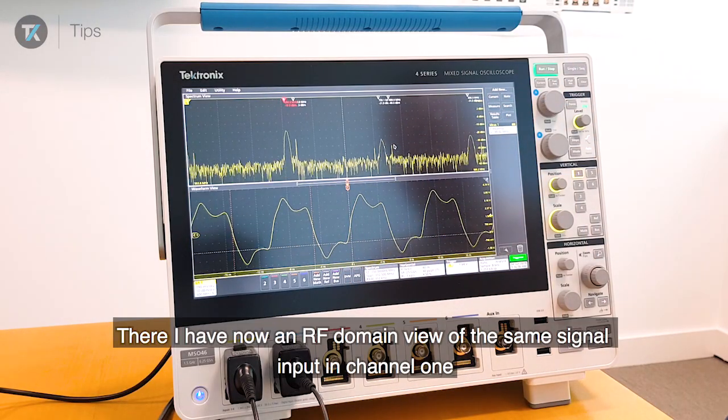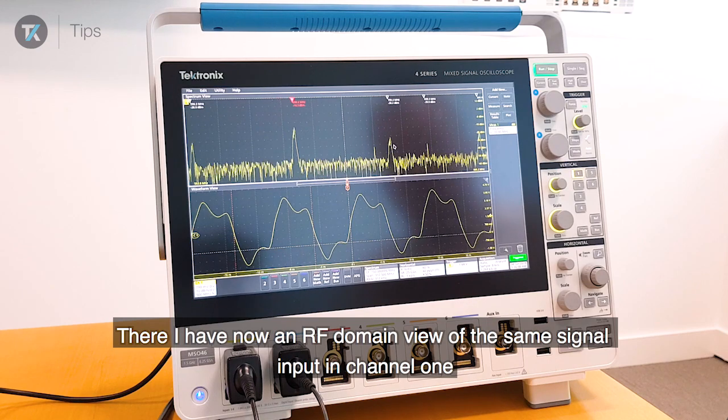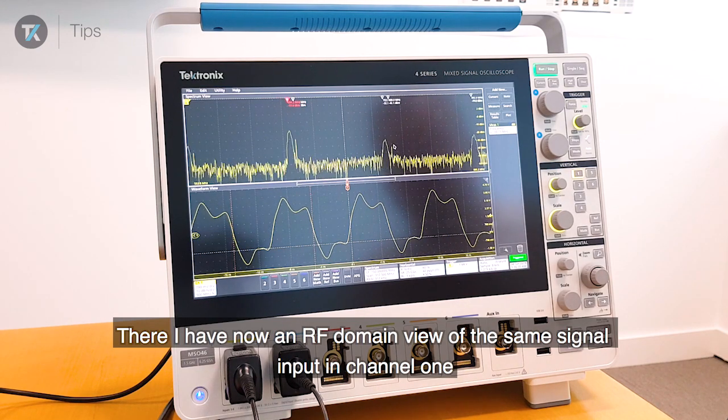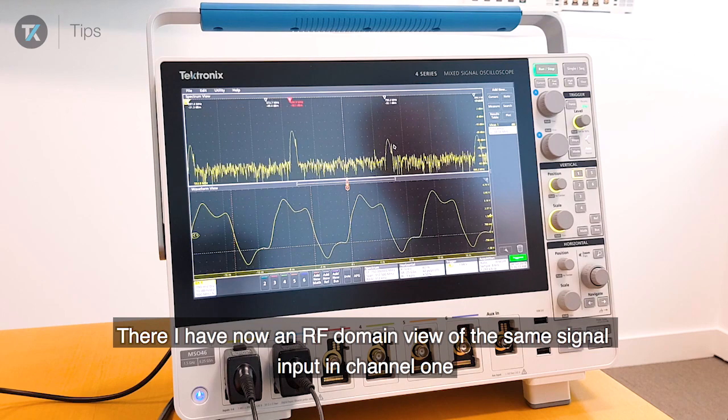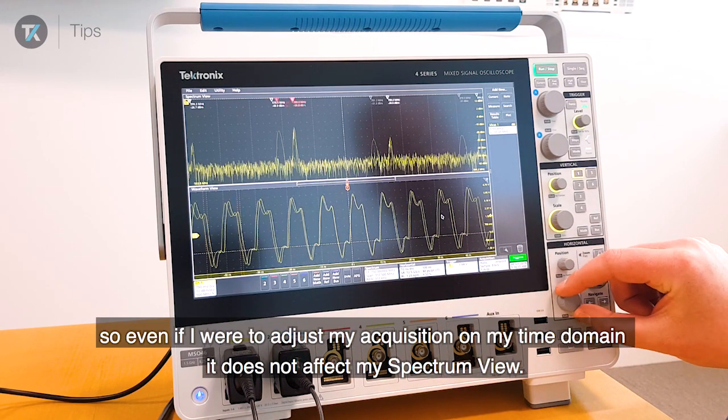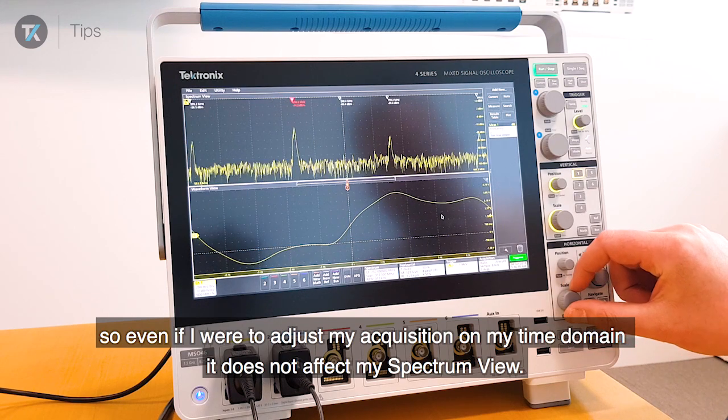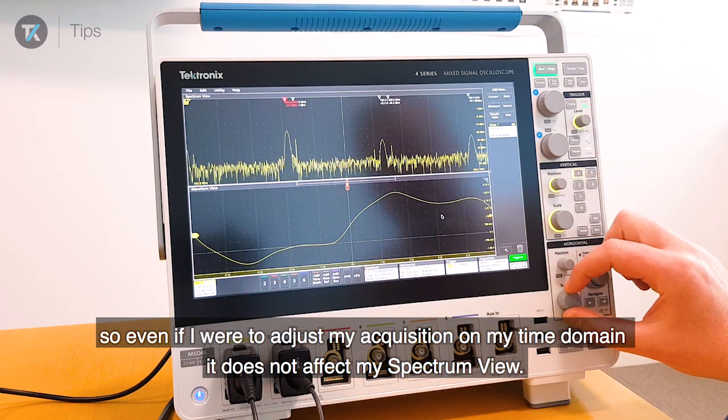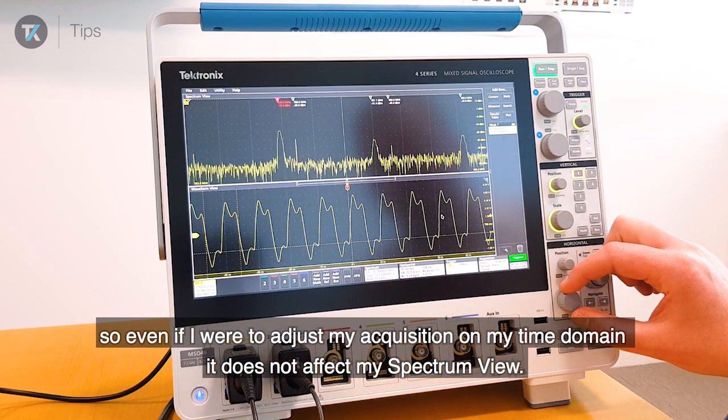There I have now a spectrum, an RF domain view of the same signal input in Channel 1. And it's completely independent. Even if I adjust my acquisition on my time domain, it does not affect my spectrum view.